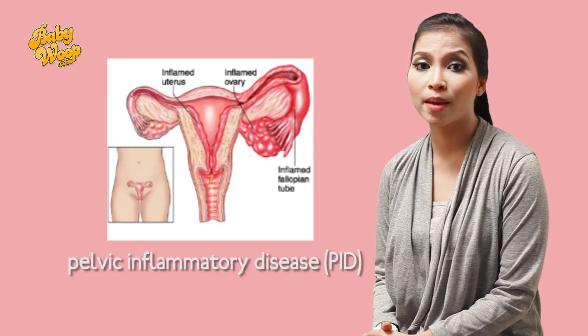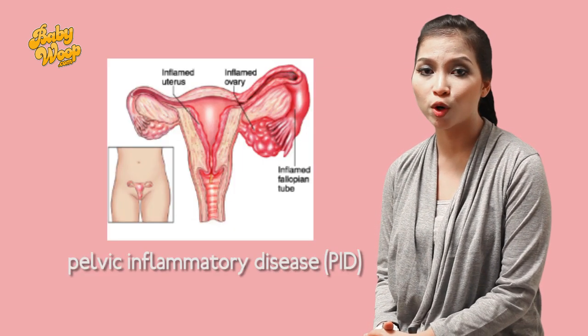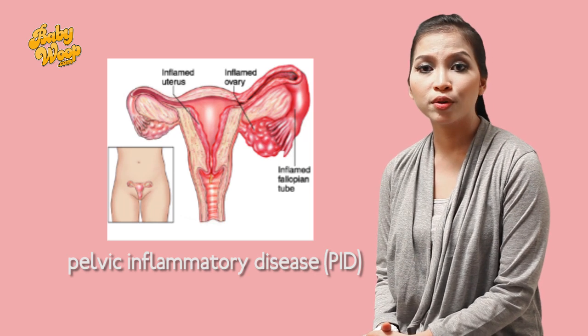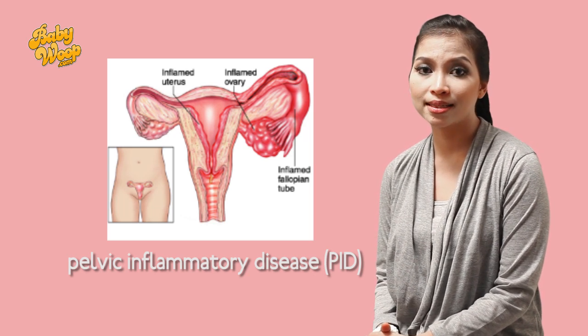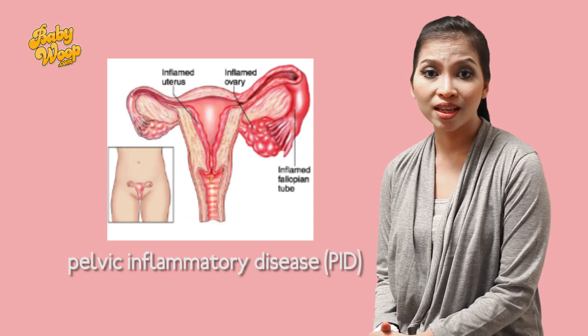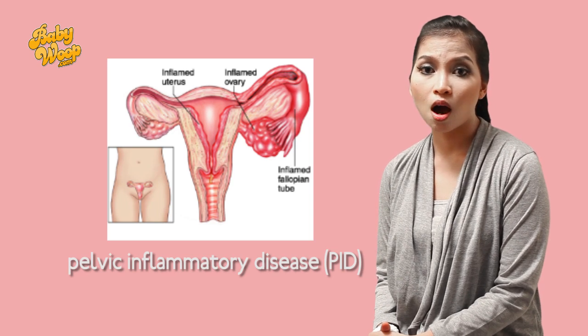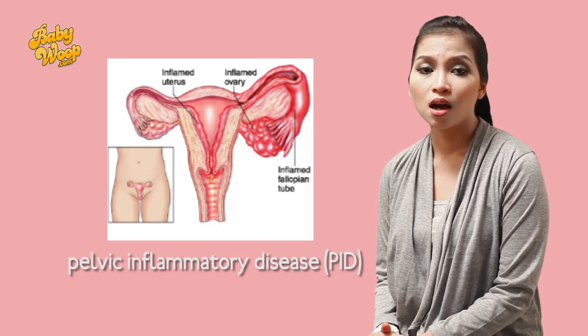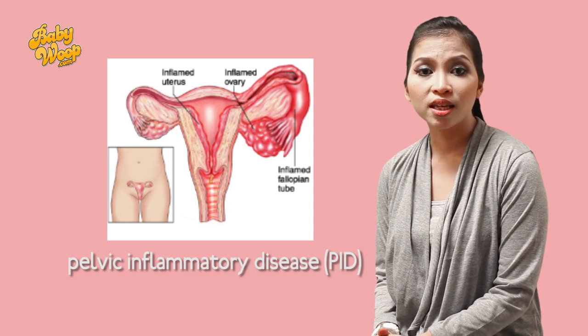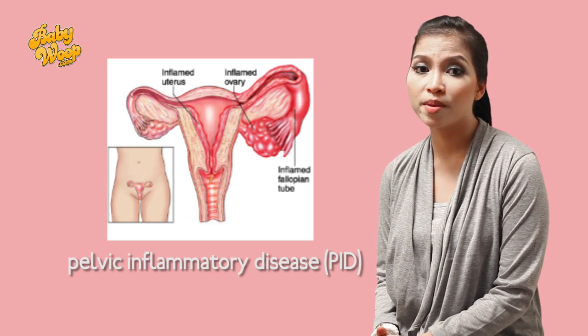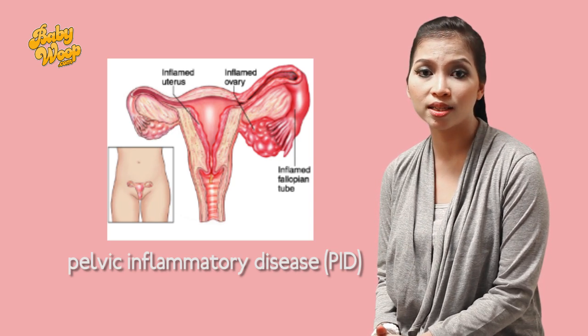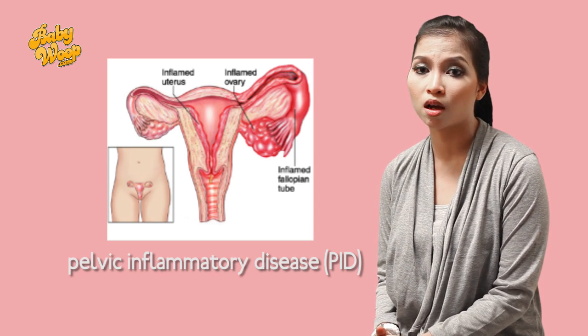The most common cause of blocked Fallopian tubes is pelvic inflammatory disease, or PID. PID is the result of a sexually transmitted disease, but not all pelvic infections are related to STDs. Also, even if PID is no longer present, a history of PID or pelvic infections increases the risk of blocked tubes.